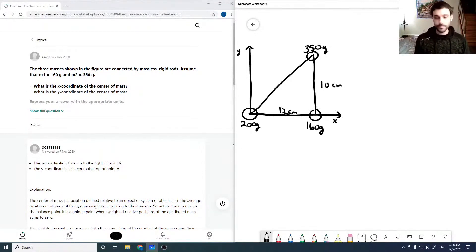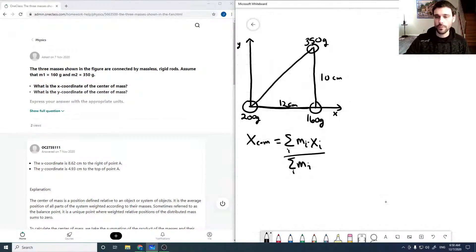So to solve for x center of mass, we just sum up all the masses times the x coordinates, and then divide it by the total mass of the object. So doing this for this problem here, we've got...